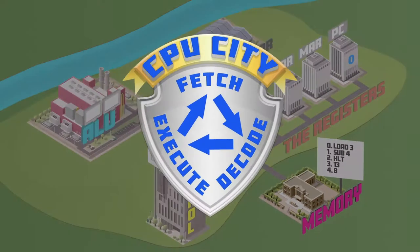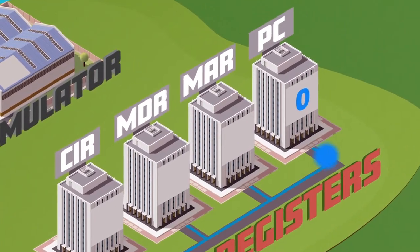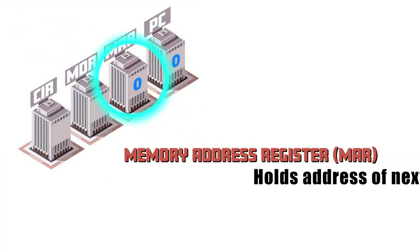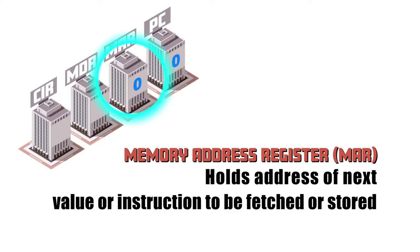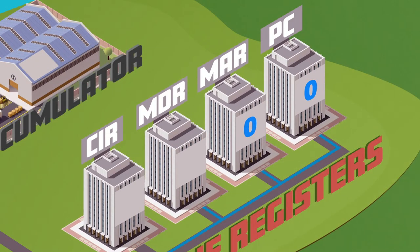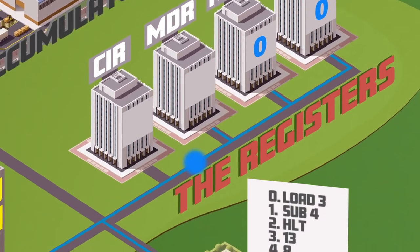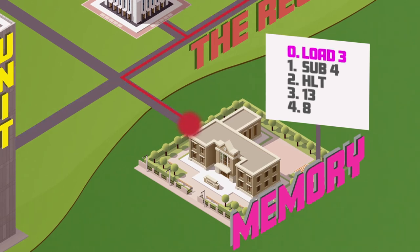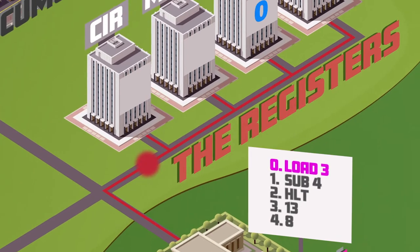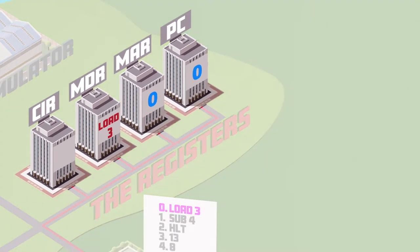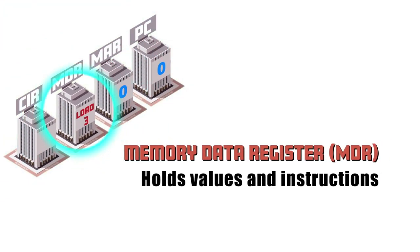The fetch-decode-execute cycle begins when the memory address held in the program counter is sent on the address bus from the program counter to the memory address register. This is where we hold the memory address of the next data value or instruction which is going to be fetched or stored. At the moment, the memory address is address zero. The zero is then sent to the memory on the address bus with the aim of fetching some data that CPU City can work on. When it reaches address zero, the program instruction stored there is copied onto the data bus and carried back to CPU City. Because the instruction is data and not an address, it's loaded into the memory data register, which holds values and instructions until they are ready to be used by the CPU.